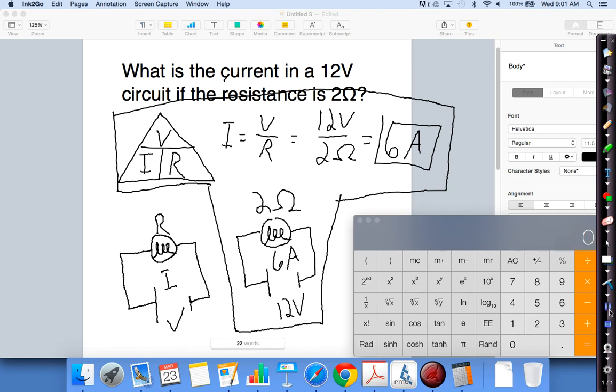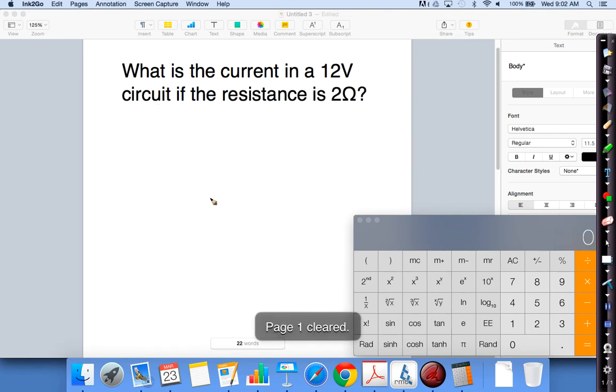Alright, so then once we have that circuit diagram done, we're pretty much good to go for that problem. So this circuit right here with the current would need to be 6 amps if our circuit had 12 volts battery and 2 ohms resistance. Alright, so let's go ahead and erase that one. Let's scroll on down.